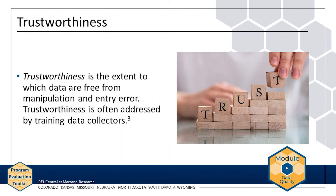Trustworthiness is the extent to which data are free from manipulation and entry error. Trustworthiness is often addressed by training data collectors, which will be discussed in Module 6. Sometimes data can be manipulated to produce a desired result — for example, if survey participants answer questions in a biased way to influence the results, or a data collection team wants to emphasize a particular result. When examining the trustworthiness of your data, consider whether there was an opportunity or an incentive to manipulate the data during data collection. You will learn more about strategies to identify errors in data entry in Module 7.